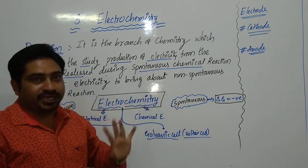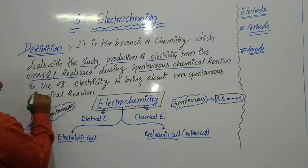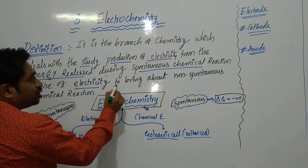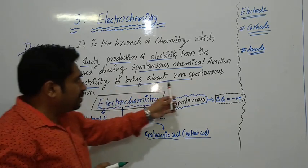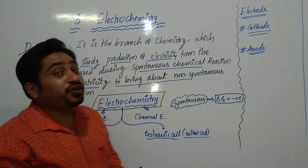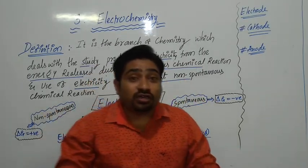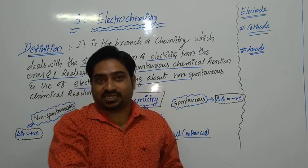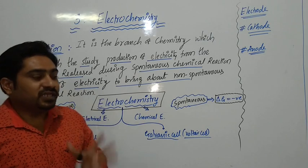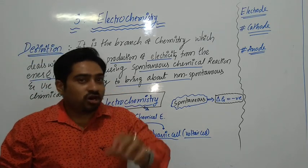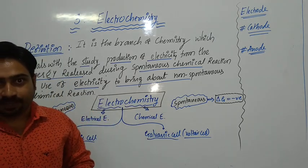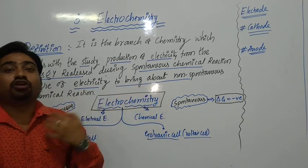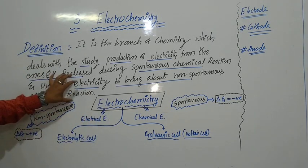Electrochemistry deals with the conversion of chemical energy into electrical energy. And it continues — there is another part: the use of electrical energy to bring about non-spontaneous chemical reactions. A non-spontaneous chemical reaction does not take place on its own; some external agents or external energy are required. By using electrical energy, you can bring about a non-spontaneous chemical reaction.